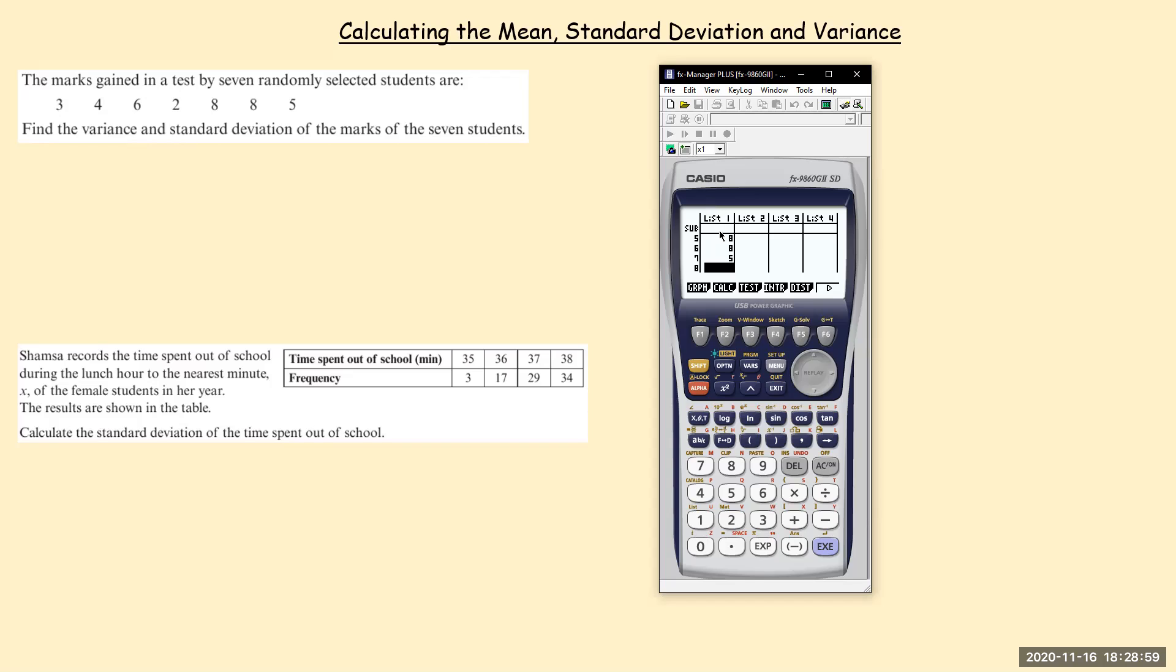So we've put all our data into a list. What we want to do at the bottom here, because we're trying to work out the standard deviation, mean, and variance, we want to do F2, which is calc. And then on this, we want one var, so one variable.